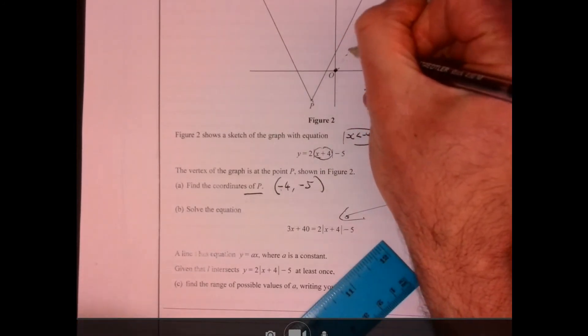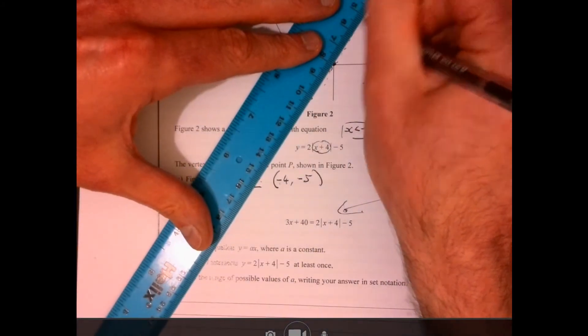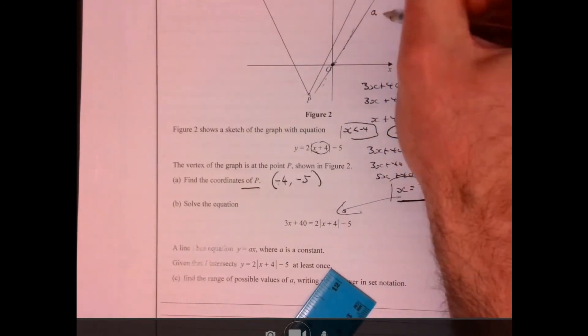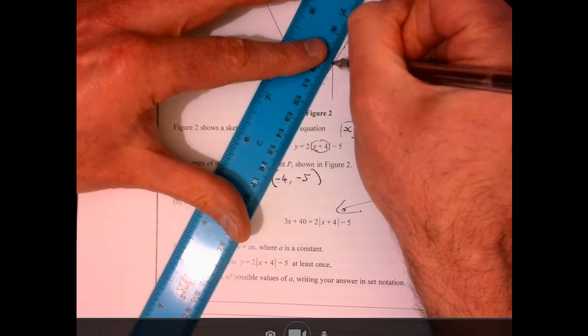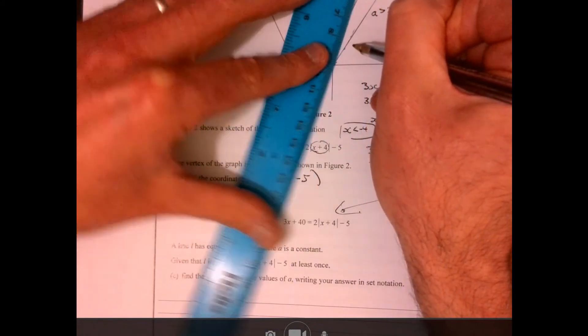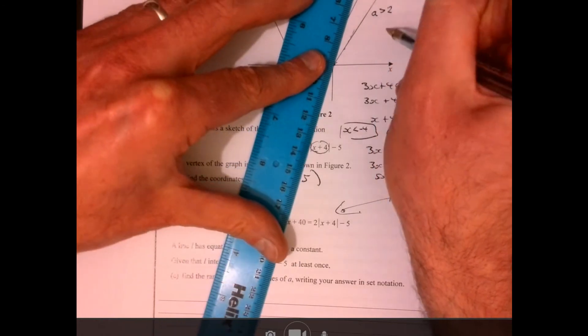So if I've got a line kind of coming through just here, which I don't know why I didn't use my ruler there, it's going to have to be the gradient a, it's got to be more than 2. Because if it's 2, it's going to be parallel, isn't it? So I want it to go, it's going to have to kind of cross over that way. So that's one way it could cross over.